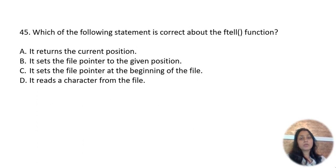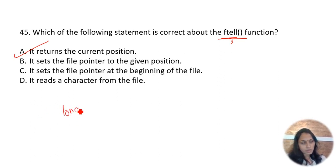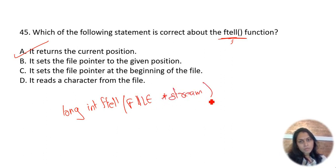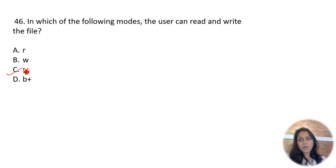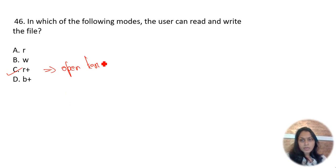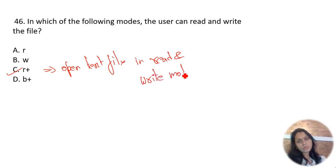Which statement is correct about ftell? The ftell function returns the current position. Syntax: long int ftell(FILE *stream). It is used to return the current position of the file pointer. In file modes, r+ is used to open a text file in both read and write modes simultaneously.